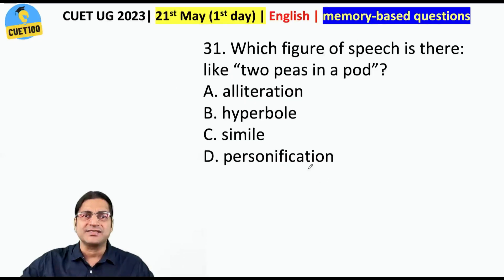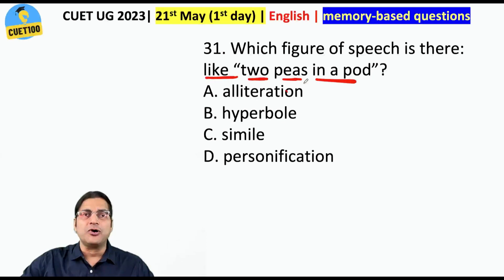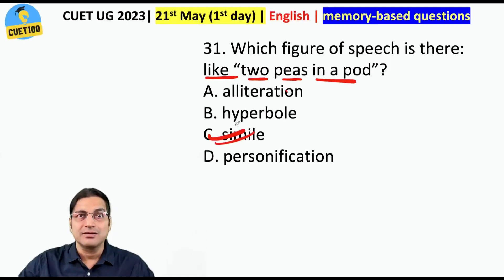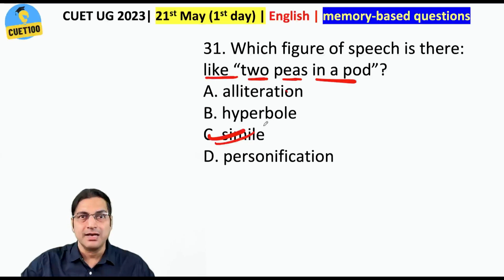Which figure of speech is in: 'like two peas in a pod'? Again, we are comparing using 'like,' so it is simile. 'You are a lion' — metaphor. 'You are like a lion' — simile.